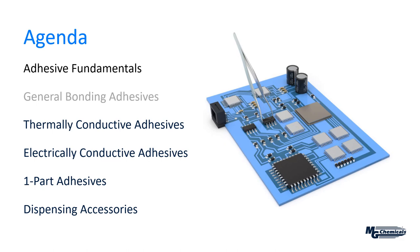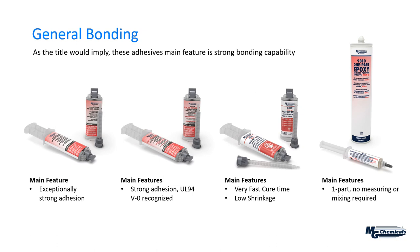Now we move on to the general bonding adhesives, which are mainly for strong bonding and providing a good hold onto a surface. We start with the 9200 — available in a 25 ml dual cartridge with a plunger and mixing tips. When you attach a mixing tip, it behaves almost like a one-part system with no separate measuring or mixing required. The 9200 is our strongest bonding adhesive, recommended for difficult-to-bond substrates. It's a structural adhesive used for bonding load-bearing joints.